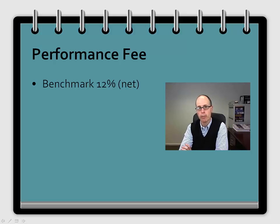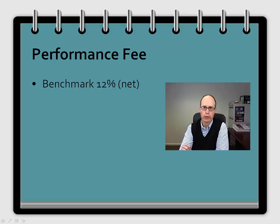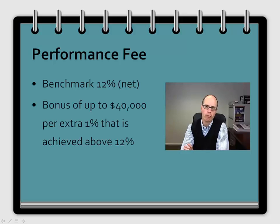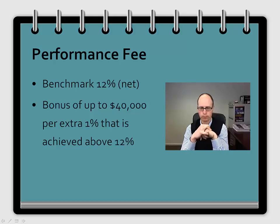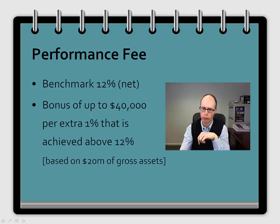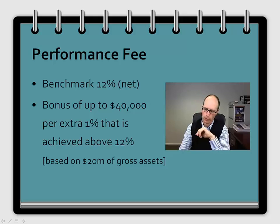There is also a performance fee, which is an incentive for us to try and get a great return for unit holders. The benchmark rate is 12%, so if we get 12% or under, we don't pay ourselves any bonus — that's net of fees. But if we achieve more than a 12% return, then for every extra 1% above 12%, we can pay ourselves a bonus of $40,000, assuming $20 million of gross assets. The more funds under management, the higher the bonus will be.